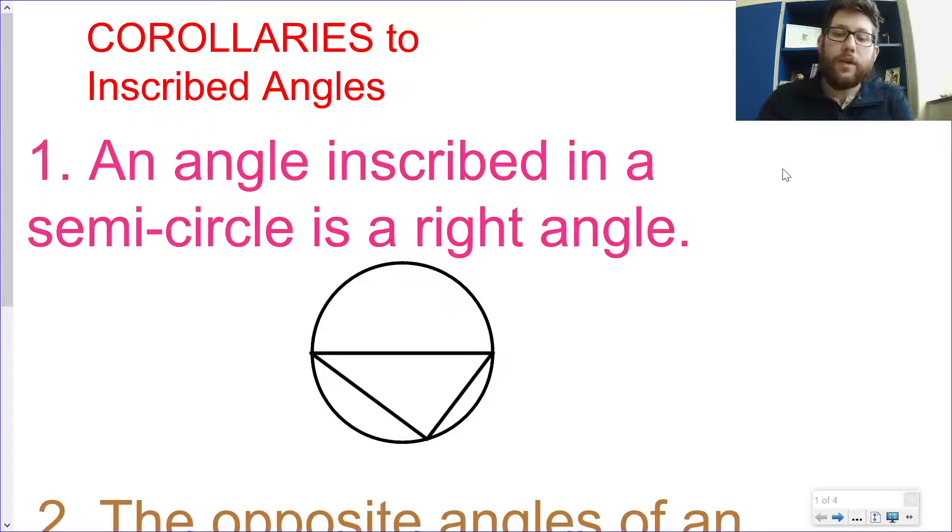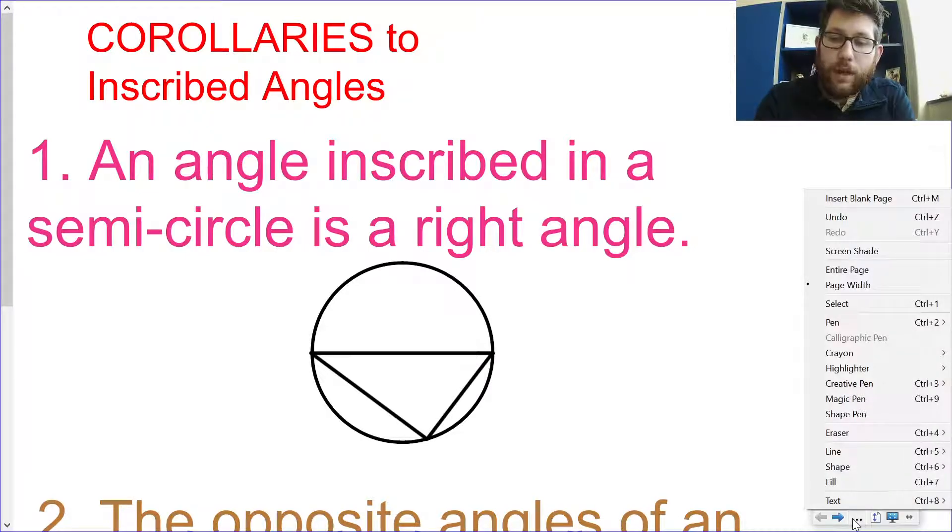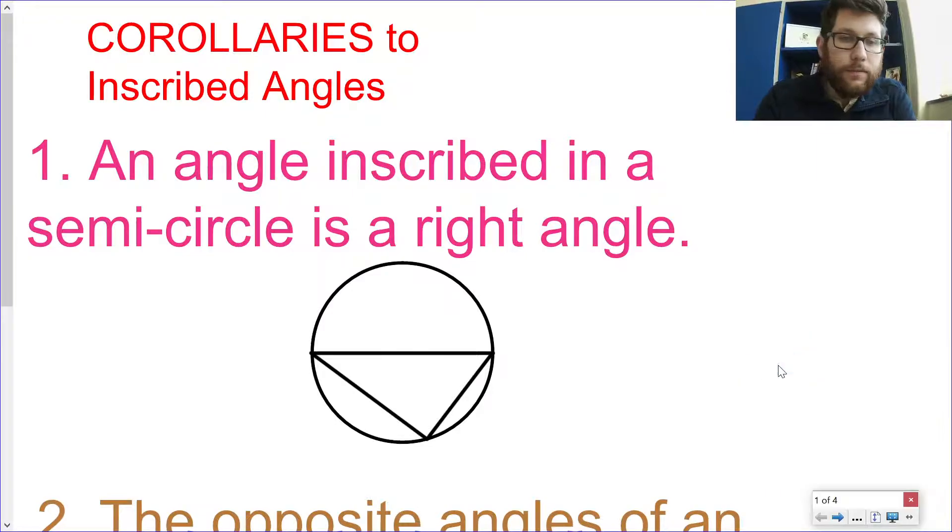The first thing we need to know is that inscribed angles, if they inscribe a semicircle, which is half a circle, it is a right angle. Now this should make sense. Assuming that's a diameter here, how big is that arc? Well, it's 180, it's half the circle.